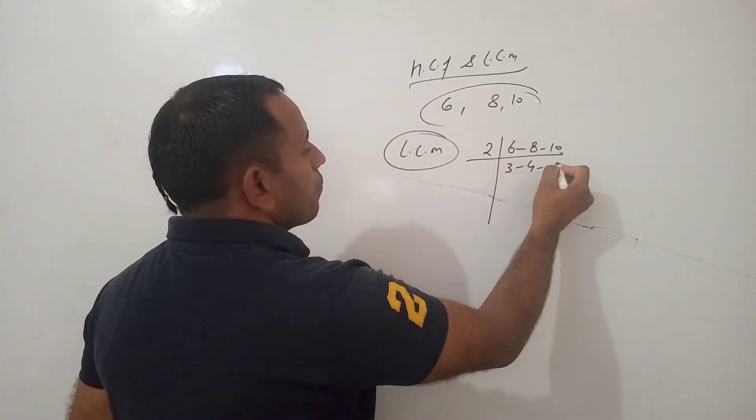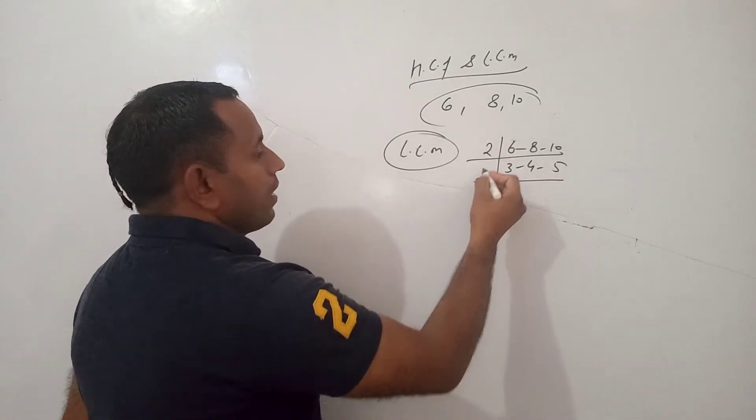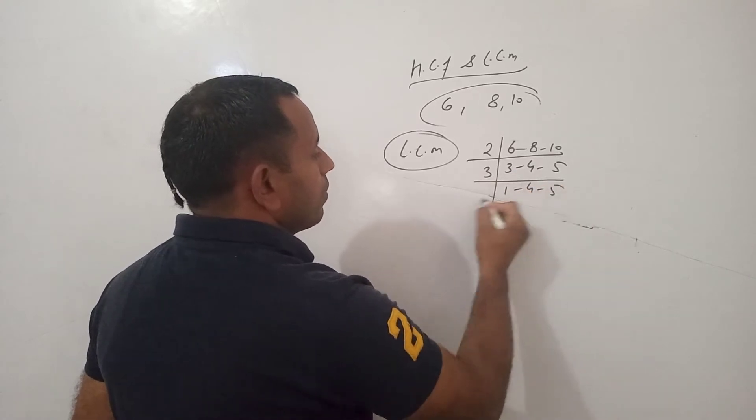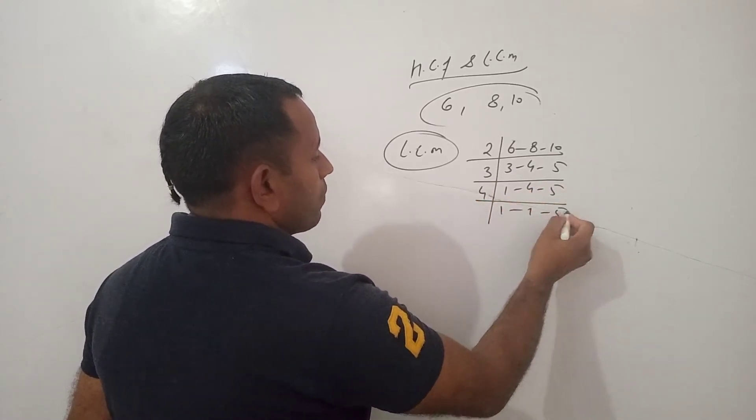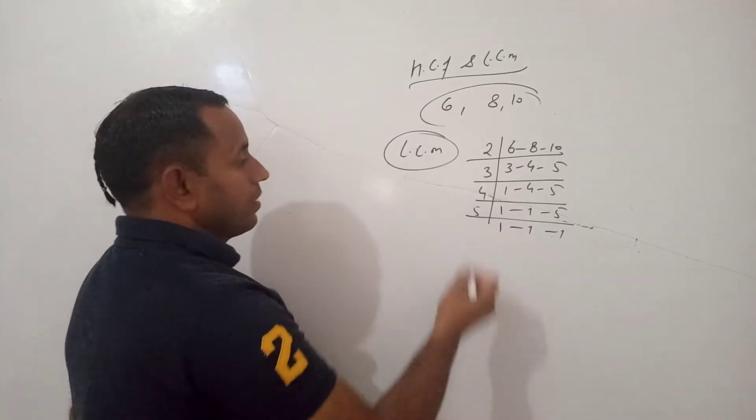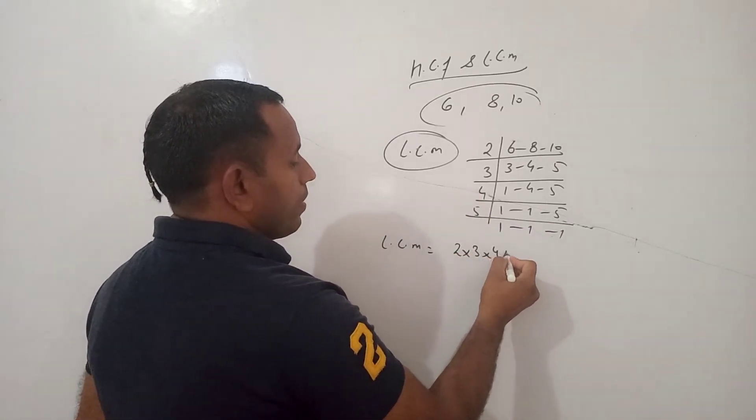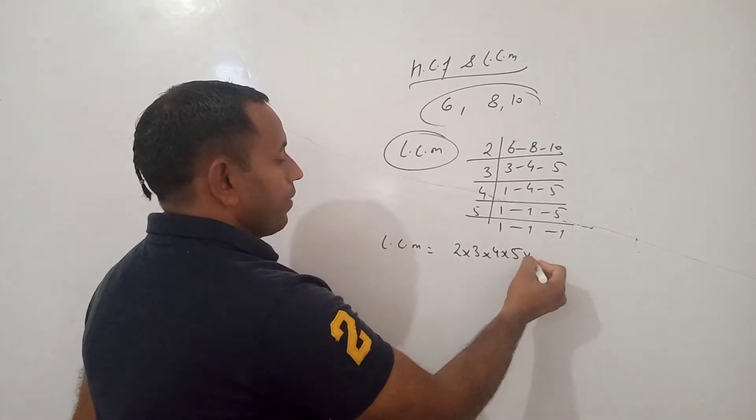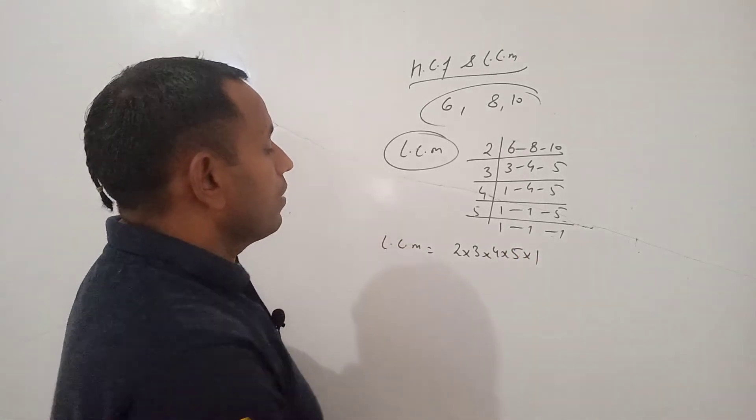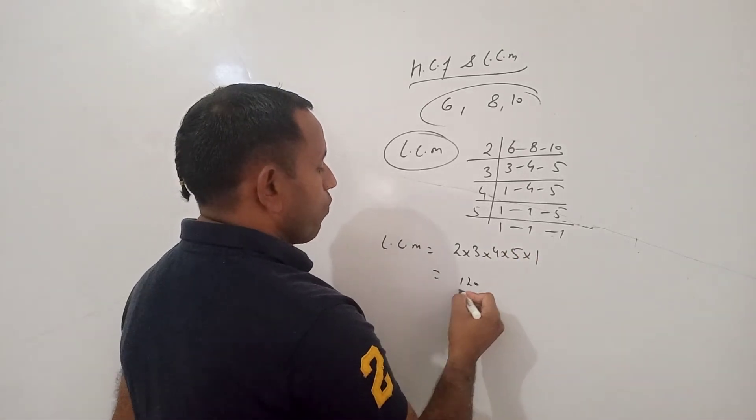2, 3, 6, 2, 4, 8, 2, 5, 10, 3, 1, and now 4, 1, and now 5, 1. So LCM is 2 multiply 3 multiply 4 multiply 5 into 1. So that is 120.